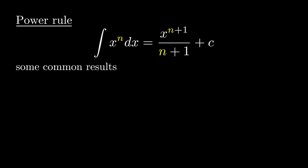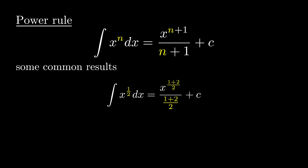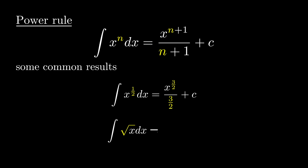Integration of x^(1/2) dx — here n is replaced with 1/2. So we get x^(1/2 + 1) over (1/2 + 1) plus c, which gives x^(3/2) over (3/2). We can rewrite: integration of √x dx equals (2/3) x^(3/2) plus c.